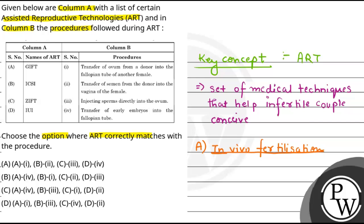It is used to assist those females who cannot conceive. In GIFT, transfer of ovum occurs from collected donors into the fallopian tube of another female who cannot produce one but can provide a suitable environment. So the correct match for A is i.